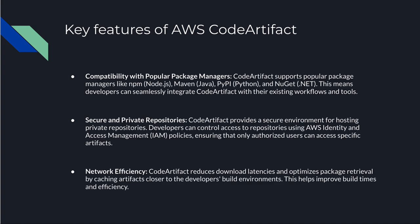The next feature is secure and private repositories. Code Artifact provides a secure environment for hosting private repositories. Developers can control access to repositories using AWS Identity and Access Management policies, ensuring that only authorized users can access specific artifacts. This is very important because these artifacts hold important information about your applications. You don't need any third-party identity and access management tool — the same IAM you use for other cloud services can manage your Code Artifact access control policies, providing granular control.